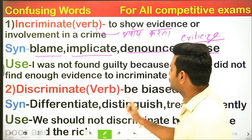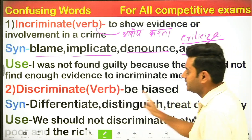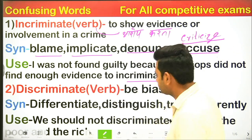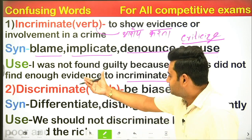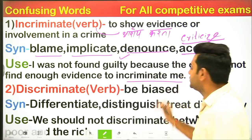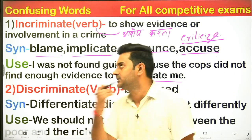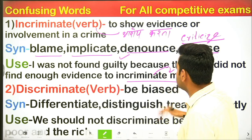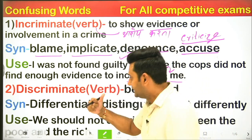Example: 'I was not found guilty because the cops did not find enough evidence to incriminate me.' Meaning: I was not found guilty because the police did not have sufficient proof to blame me or incriminate me.